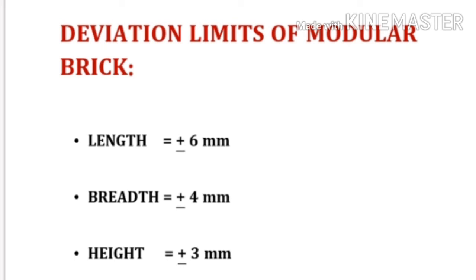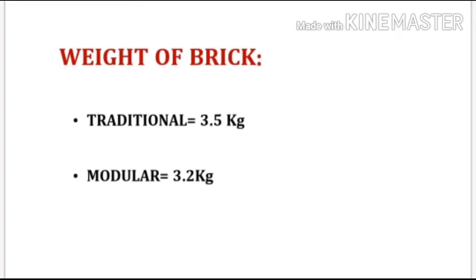Deviation limits of modular brick: length is ±6 mm, breadth is ±4 mm, and height is ±3 mm. Weight of brick: traditional brick is 3.5 kg and modular brick is 3.2 kg.